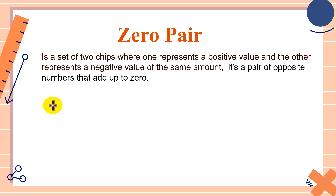Let me give you an example. If you have one yellow counter, this will be a positive number — positive one. And then you also have one red counter — this will be negative one. If you have one yellow chip and then one red chip, you can simply cancel this out because this will add up to zero. Because if you write this into numbers, positive one plus negative one equals zero.